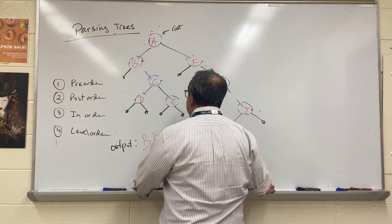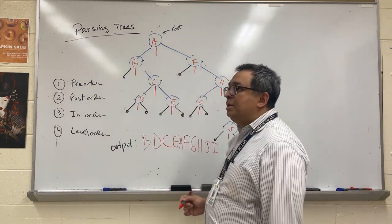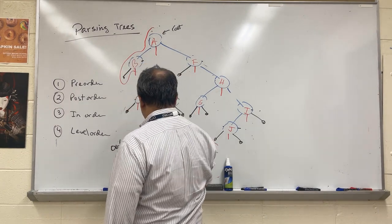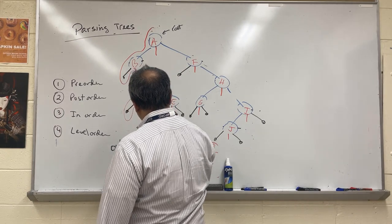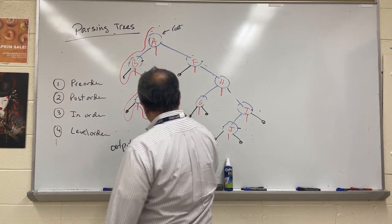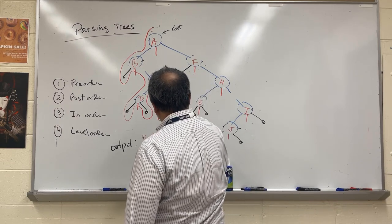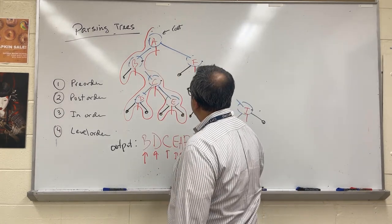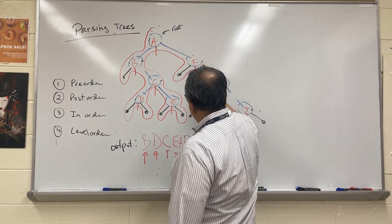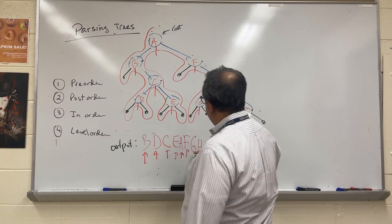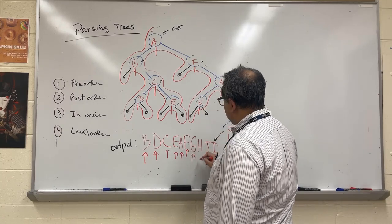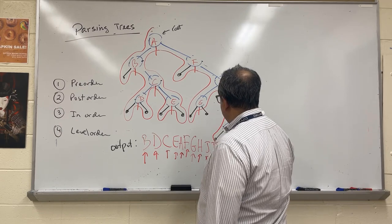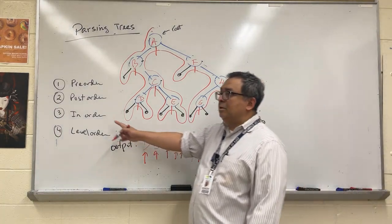For in-order, the tabs go at the bottom of each node. Coming around with the cursor, I hit the tab for B, then D, then C and E, then A, then F, G, H, J — and that gives us the in-order sequence. So: left tab = pre-order, right tab = post-order, bottom tab = in-order.